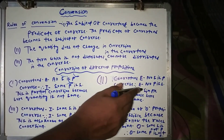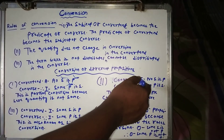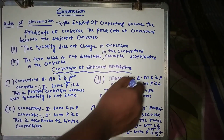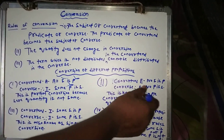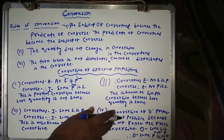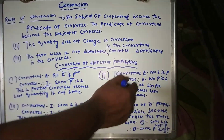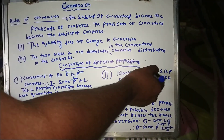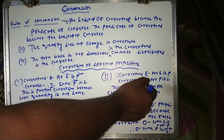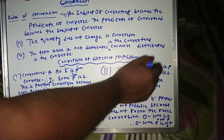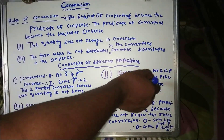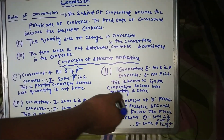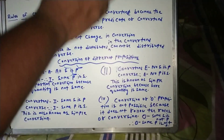The conversion of the E proposition: 'No S is P' converts to 'No P is S.' This is also known as simple conversion, because the quantity remains the same — both the convertent and the converse are universal propositions. Since the quantity does not change, this is called simple conversion.